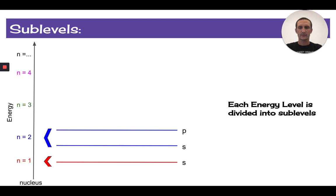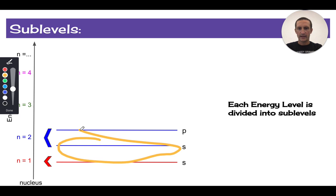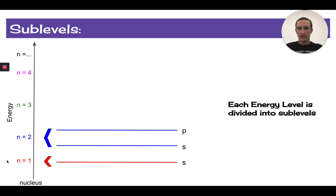The second energy level is subdivided into two sublevels. And we label those with letters as well. The S is the lower kind of rung of the ladder and the P is the next one up. And so we would refer to this as, if I'm looking at these, I would call this the 2S sublevel and I would call this the 2P sublevel. So we can refer to both the energy level and the sublevel there.